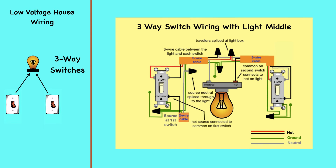The power source in this circuit is at the first switch, and the light fixture is located between switch number one and switch number two. A three-wire cable runs between each switch and the light fixture. The hot source wire is connected to the common terminal on switch number one, and the common terminal on switch number two is connected to the hot terminal on the light. The traveler wires are spliced in the fixture box to run between the traveler terminals on the switches — they are not connected to the light.